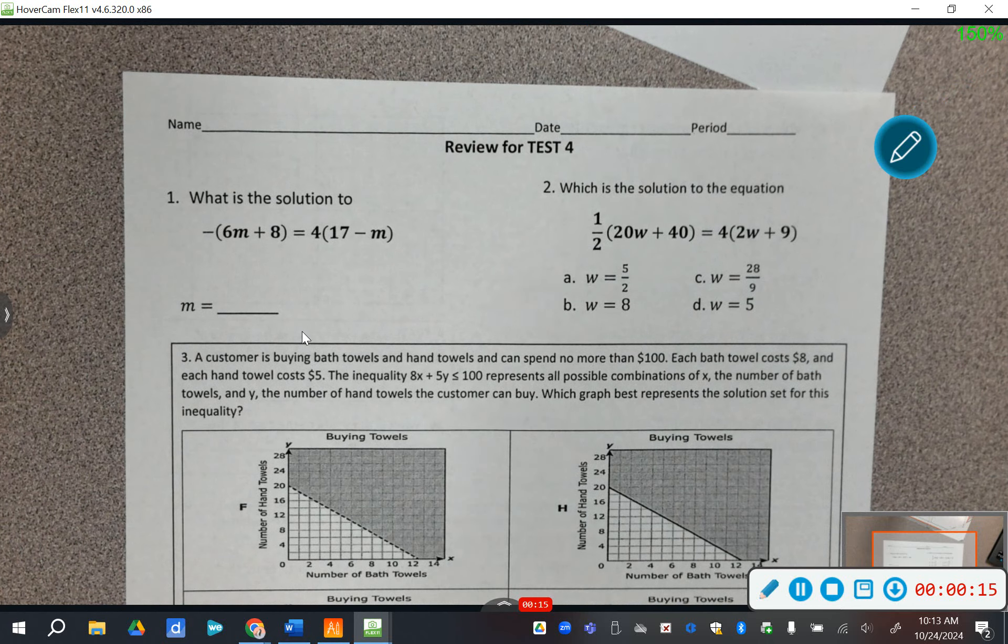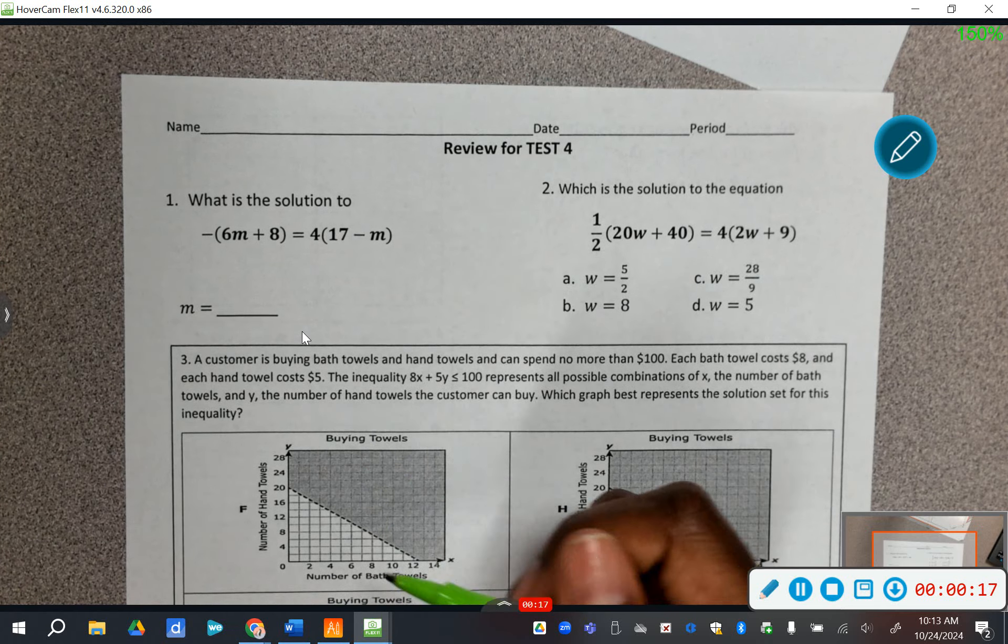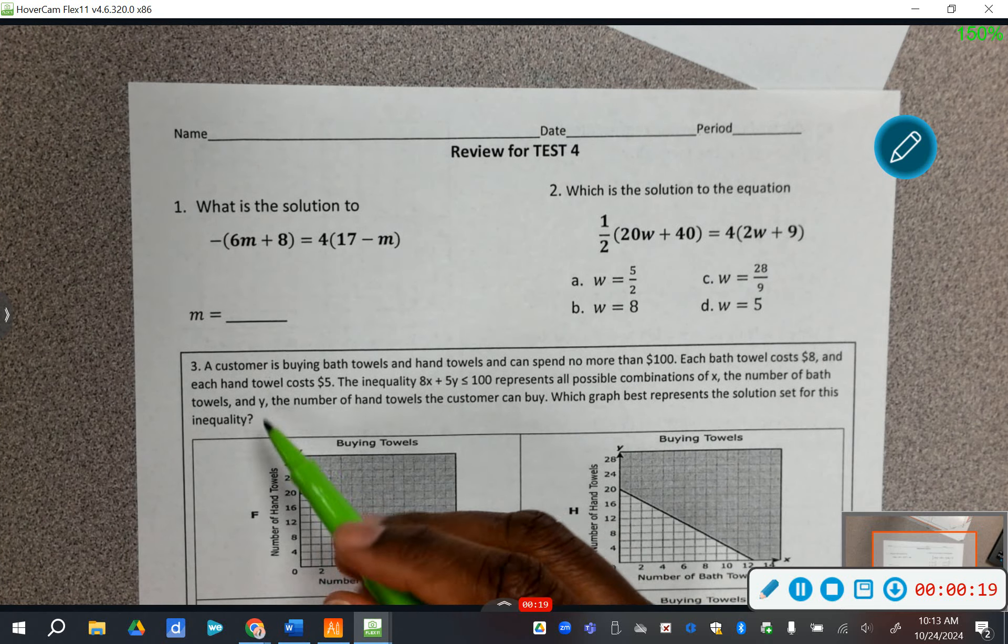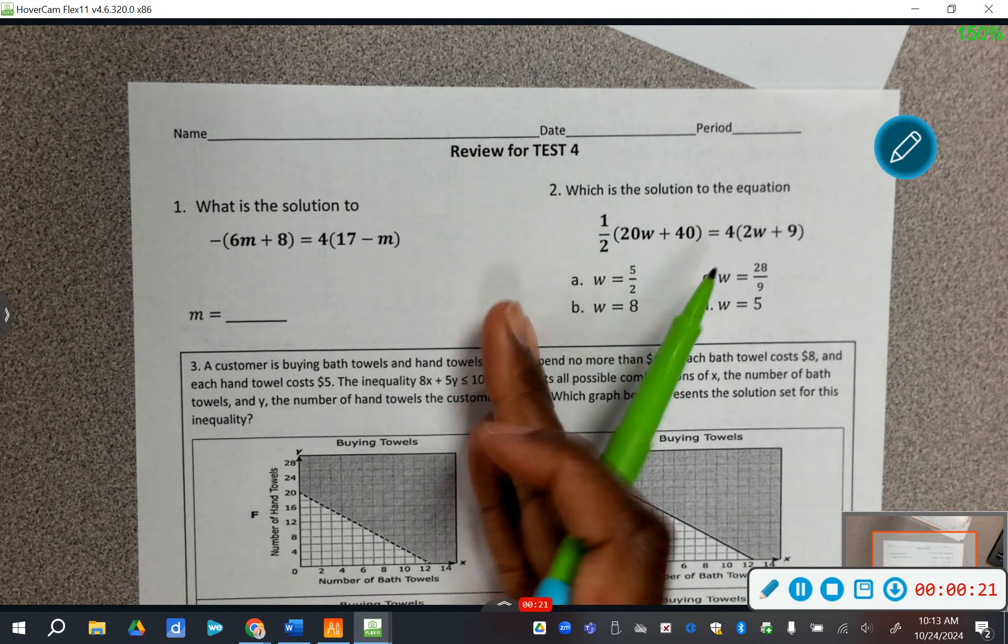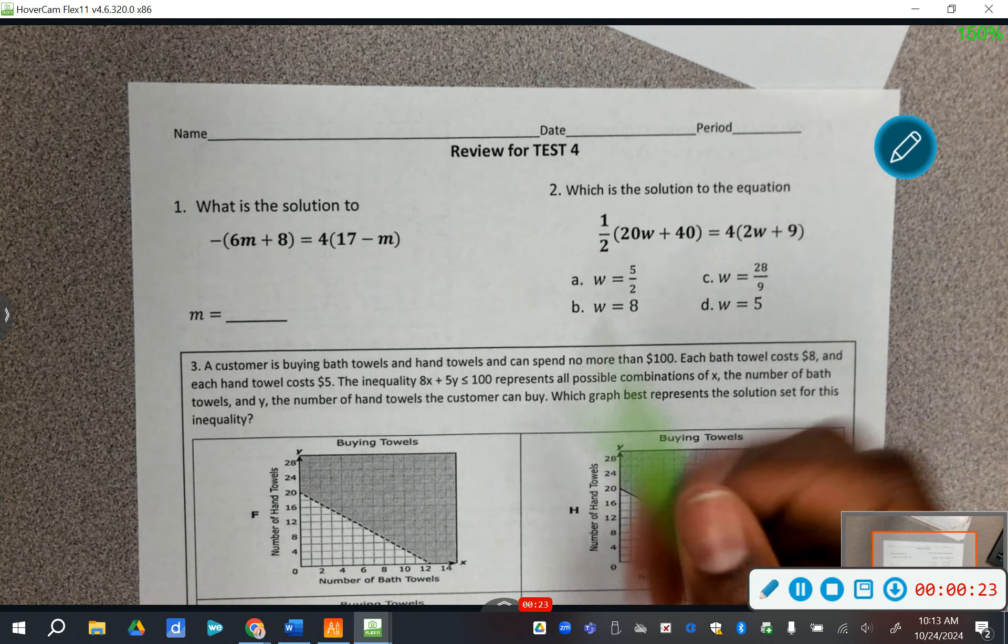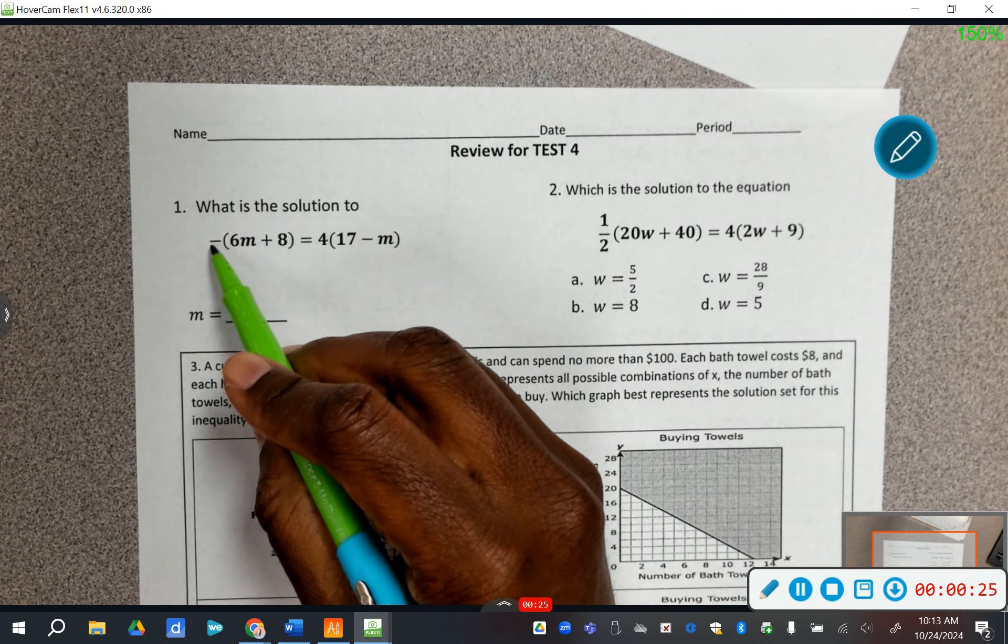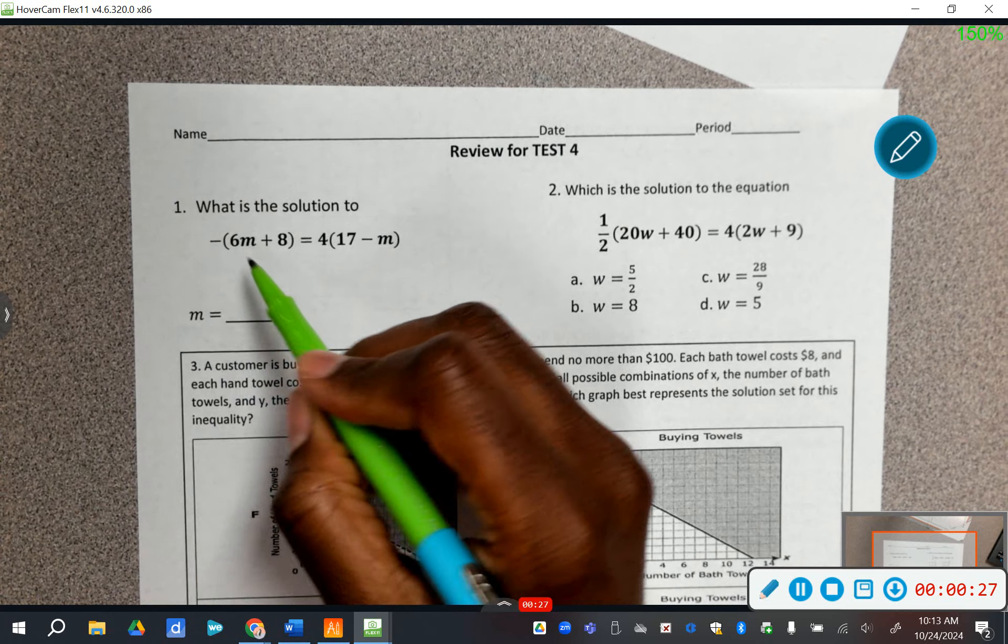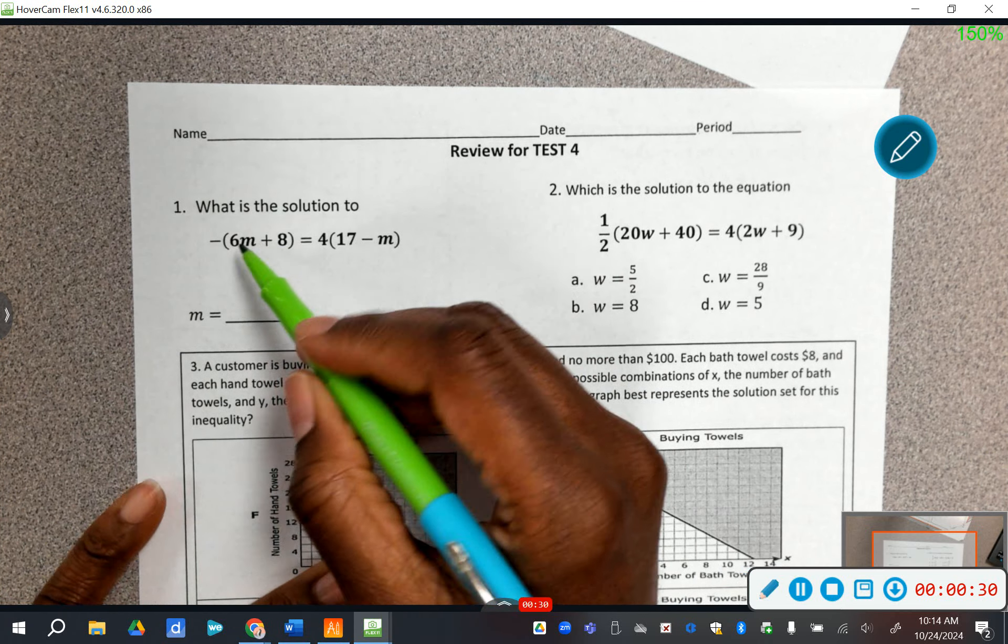For numbers 1 and 2, you will have to remember how to show your work for them because there are some problems that you do have to show your work and then there's others that you don't have to. Please remember that when you see parentheses, that means that there is something that needs to get multiplied.